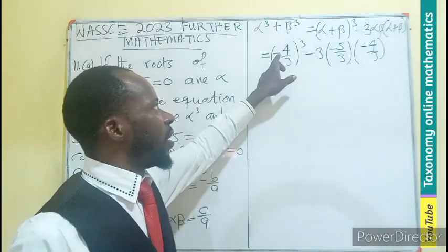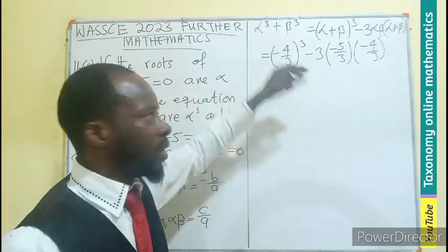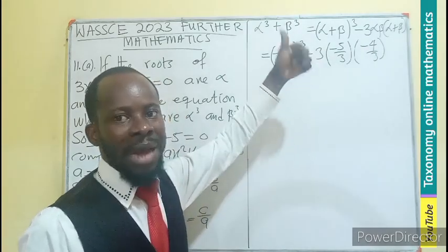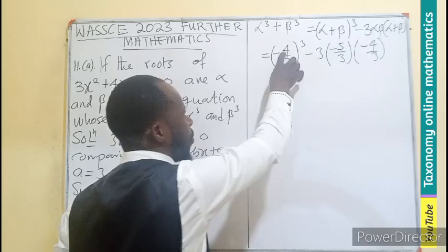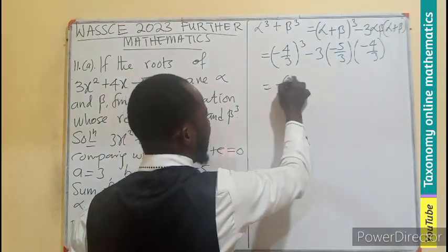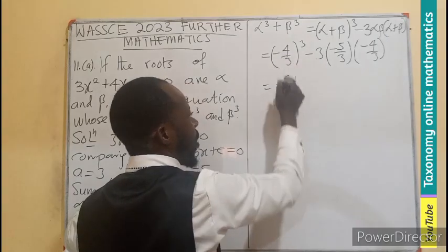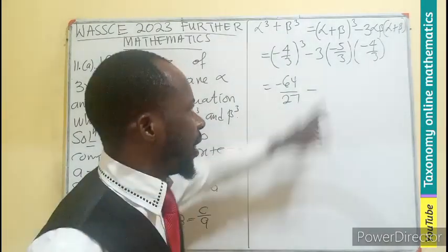I will be having the α + β as (-4/3)³, then minus 3 into bracket, the product which is going to be -5/3 from here, then that will be multiplying the sum which is still -4/3. Just by substitution. So let's perform the simplification. This is going to be -4³/3³. And we know since the power is an odd number, your negative number will still be there. So if you have the cube of 4, you get 64. Meaning this becomes -64.